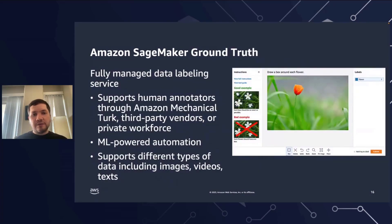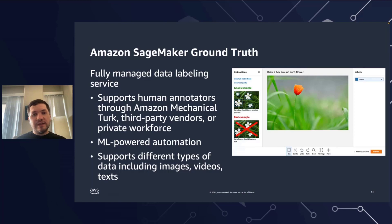And finally, SageMaker Ground Truth — a fully managed data labeling service. It's very flexible: you can use it to label on your own or with your internal workforce, or you can use something like Amazon Mechanical Turk or third-party vendors for labeling. Another advantage is that it has ML-powered automation, meaning it can train a model based on your labels and show predictions to the labelers, so they don't need to label from scratch.